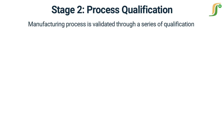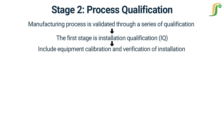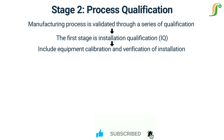Once the process design is complete, the manufacturing process is validated through a series of qualification stages. The first stage is installation qualification (IQ). During this stage, the manufacturing equipment is installed and tested to ensure it meets the defined specifications. The IQ stage may include equipment calibration, verification of installation and operational procedures, and documentation of equipment performance.